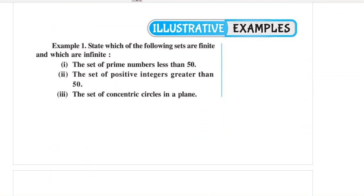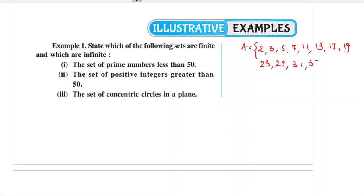Let's discuss examples: state which of the following sets are finite and which are infinite. The set of prime numbers less than 50 — listing them: 2, 3, 5, 7, 11, 13, 17, 19, 23, 29, 31, 37, 41, 43, 47 — that's it. So this set is finite.